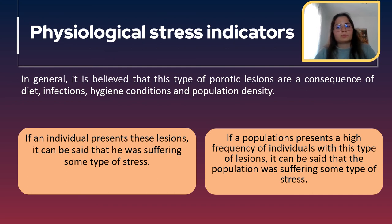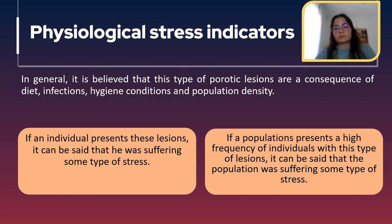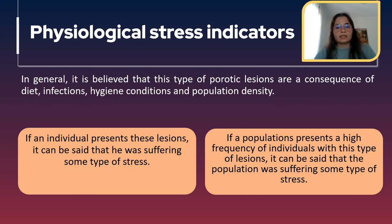If an individual presents these lesions, it can be said that they were suffering some type of stress. We can apply this to a population level: if a population presents a high frequency of individuals with this type of lesions, it can be said that the population was suffering some type of stress.